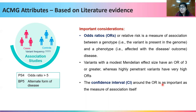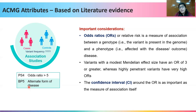The confidence interval is as important as the odds ratio itself as a measure of association, and it should be greater than 1. The BP5 attribute is given when there is a clear alternate form of disease already present — for example, when a patient already has a reported pathogenic variation explaining a particular phenotype, and you find a new variation in another gene that could also lead to that phenotype. Since the already-present pathogenic variation explains the phenotype well, the newly found variation is likely benign, and BP5 can be assigned.